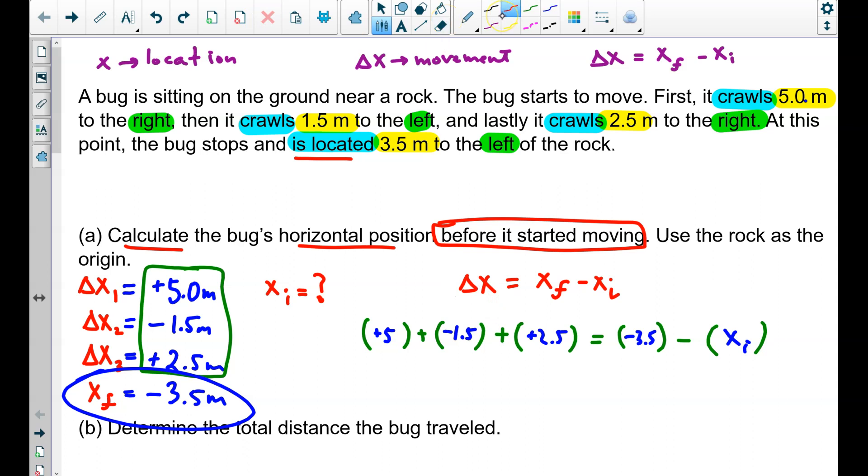So, this is pretty straightforward, right? We have one equation with one unknown, x initial. And we can simply solve. What I'm going to do is add 3.5 to the other side. So, what's this going to be? I've got negative 1, negative 2.5. This is positive 2.5 equals x initial, right?